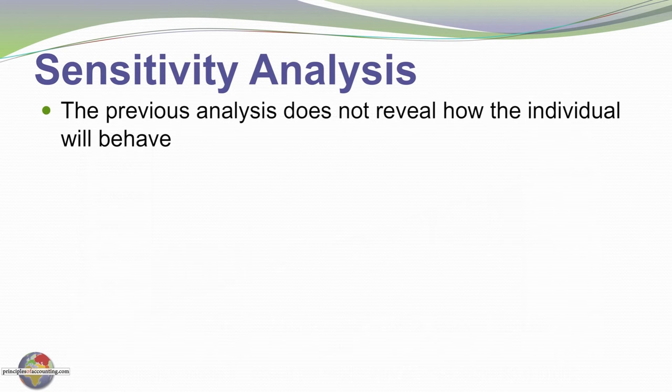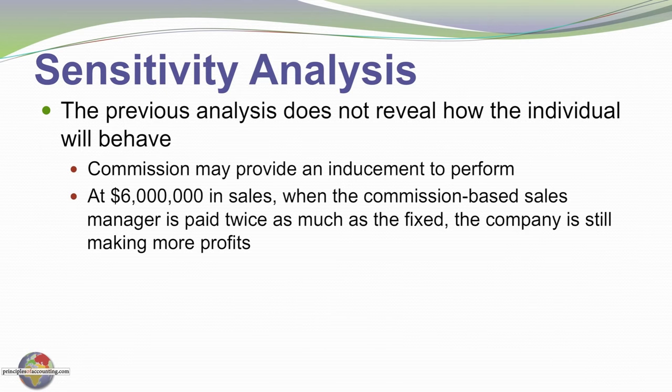What the previous analysis does not show is that human behavior also needs to be considered. Commissions may provide an inducement for the sales manager to perform at a higher level. At six million dollars in sales, for example, the commission-based manager makes twice as much as they would at the fixed cost of a hundred and twenty thousand dollars. The business will be much better off at the six million dollar sales level, so sometimes the lowest cost option is not the best cost option in terms of affecting total profitability.